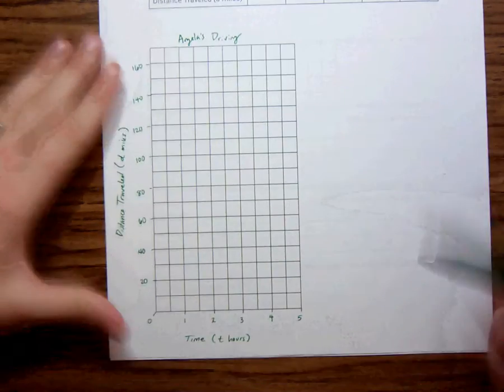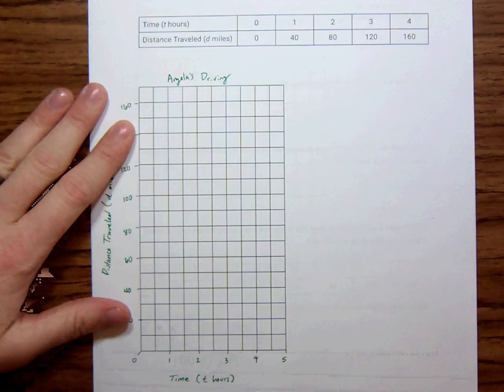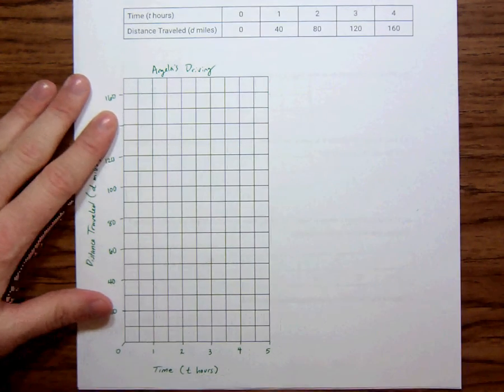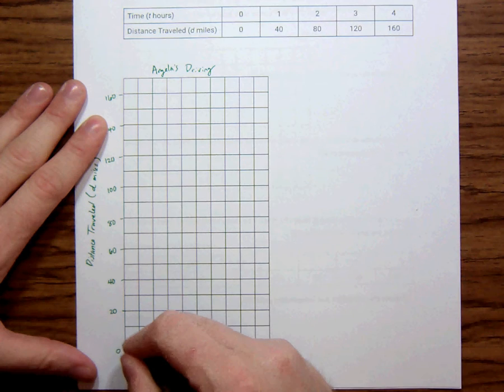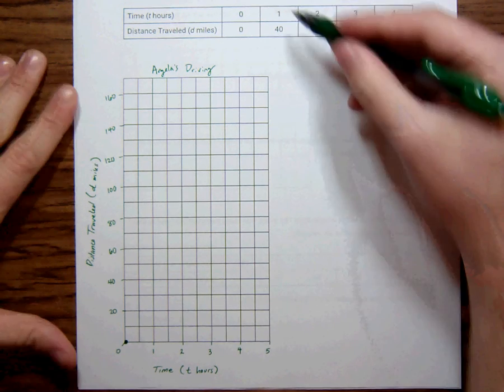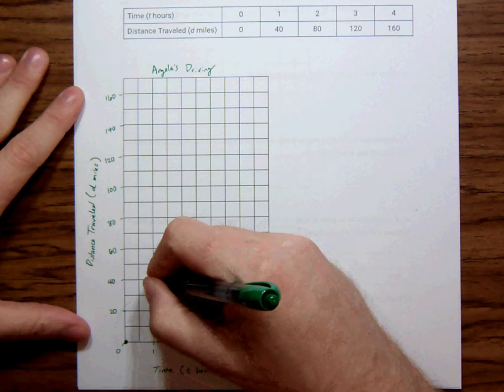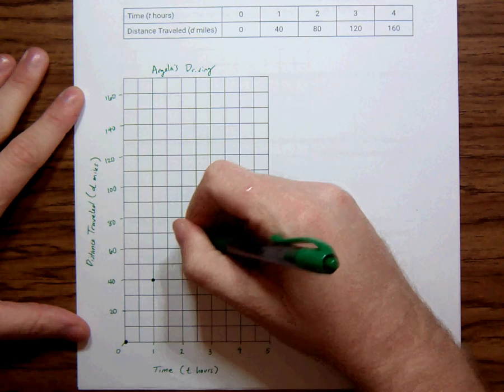Okay, so now what I want to do is I want to graph. And I've been given the table already. So I'm going to go ahead and plot those points. So I have, at T hours, we've traveled no time. After one hour, we've traveled 40 miles. After two hours, shoot. After two hours, I've traveled 80, or Angela has.